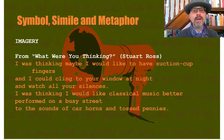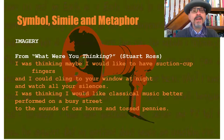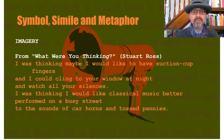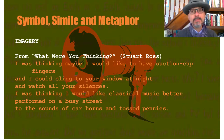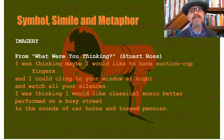Stuart Ross is an amazing Canadian poet, and his images are right off the hook. He's quite surreal: "I was thinking maybe I would like to have suction cup fingers, and I could cling to your window at night and watch all your silences. I was thinking I would like classical music better, performed on a busy street to the sounds of car horns and tossed pennies." This is extremely rich writing, and it's all about looking at one's lover and one's world in a new way — specifically addressing the ability to defamiliarize yourself from the familiar. So it's almost a poem about poetry, certainly a poem about experiencing things.